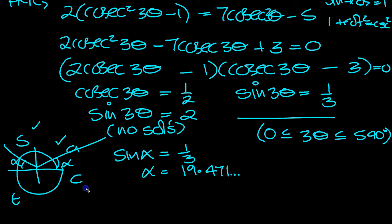So 3 theta then equals, because we're working out 3 theta, come round to here as the first solution, which is 19.471. The next solution would be round to here, which is 180 minus 19.471, so that's 160.528.